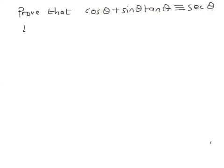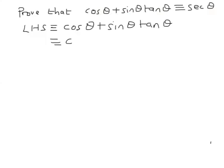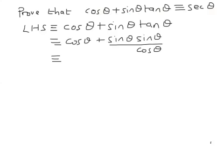Now the way to prove something is to start with the left hand side of the equation and end up with the right hand side. So the left hand side is cos θ plus sin θ tan θ. And as you know, tan θ is sin over cos, so it's sin θ times sin θ all divided by cos θ, because tan is sin over cos.